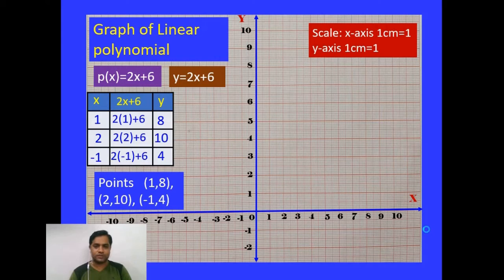Now let us plot the points which we obtained earlier. First point: (1, 8). Here 1 is x-coordinate and 8 is y-coordinate. So if we want to plot this, we should take x-coordinate 1 and y-coordinate 8. Then the point will be at that place.